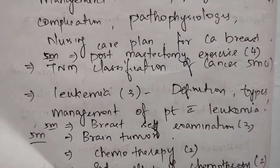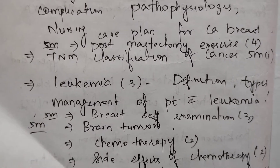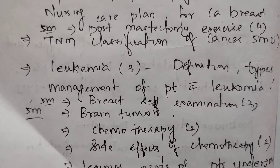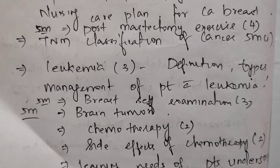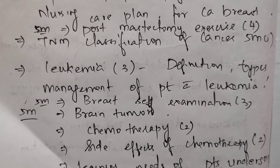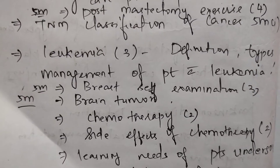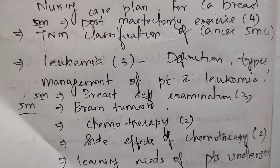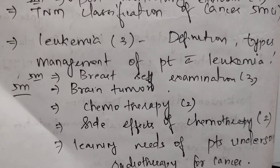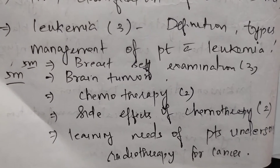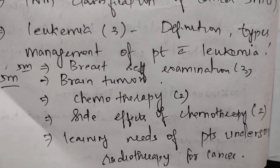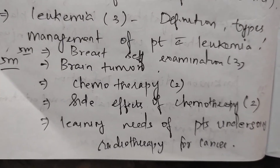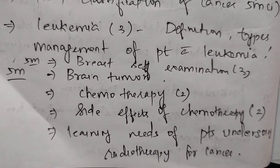Next, leukemia — 15 marks, three times — definition, types, management of patients with leukemia. In 5 marks: breast self-examination three times, brain tumor, chemotherapy and side effects of chemotherapy, and learning needs of a patient undergoing radiotherapy for cancer.